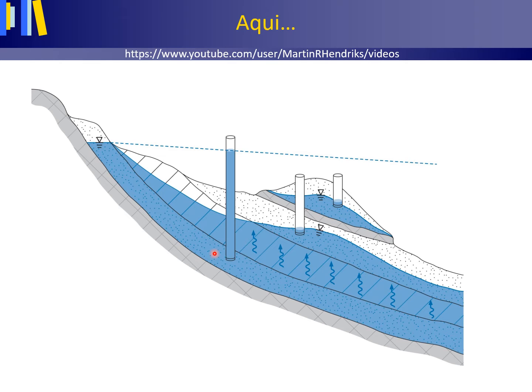An unconfined groundwater has already been defined as groundwater where the water table can establish itself freely. It's also called phreatic groundwater. An aquifer with unconfined groundwater is called an unconfined aquifer.